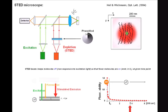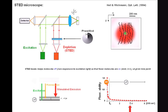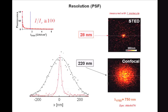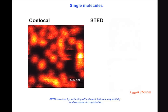This is exactly how we break the diffraction barrier. The resolution will be given by the size of that small region in which fluorescence is still allowed, and that size can be very small. Here we have a diameter of about 220 nanometers for a normal confocal microscope, and then 28 nanometers for the STED case, measured with a probing single molecule which was scanned through the focal region. If that region has become so small, we must be able to see much sharper than before.